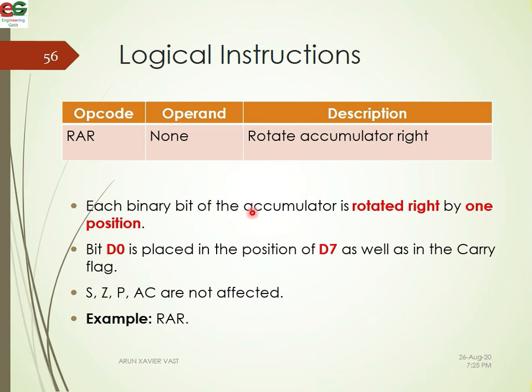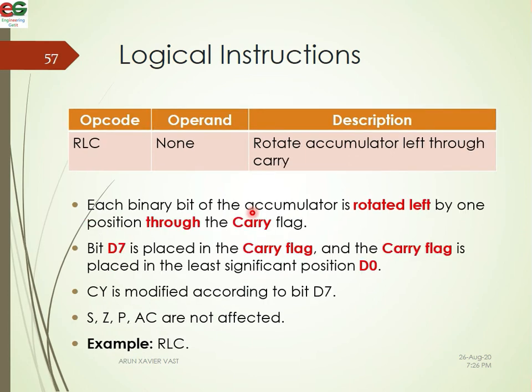In RRC, bit 6 moves to position 5, position 5 to 4, position 4 to 3, position 3 to 2, position 2 to 1, and D7 wraps around — this is rotate accumulator right. Next is RAL — rotate left through carry: the accumulator is rotated left through the carry flag.